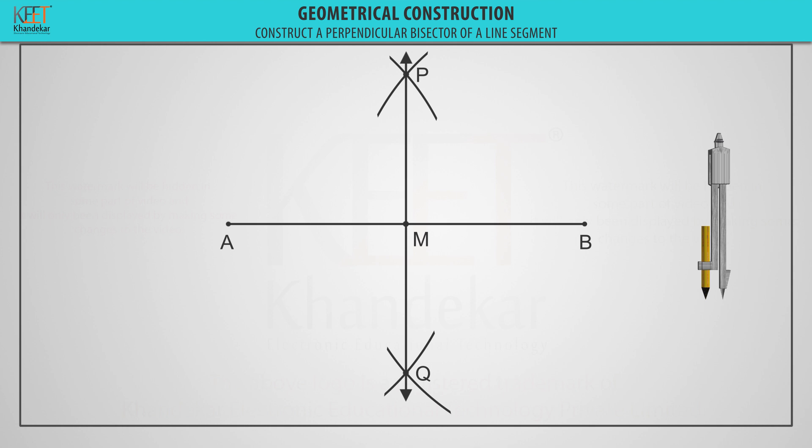Note here, point M is the midpoint of the line segment AB. Therefore, length AM equals length MB equals half length AB, or segment AM is congruent to segment MB.